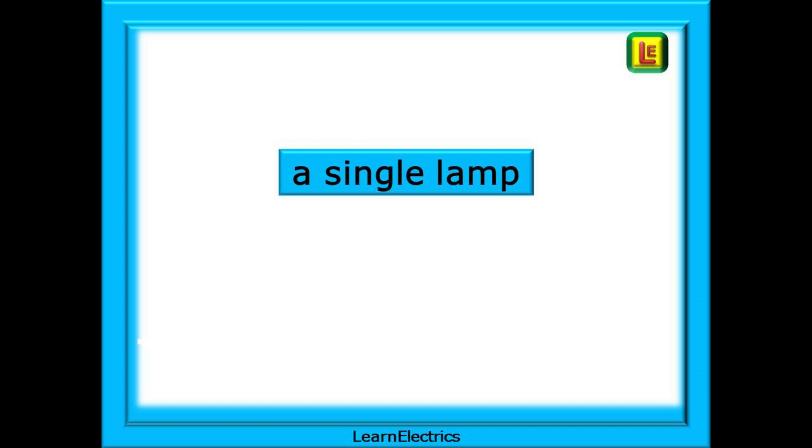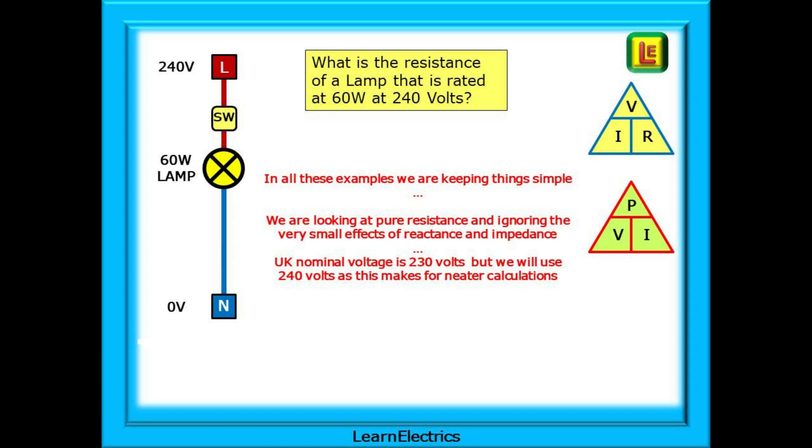Start by looking at the single lamp circuit. Begin by finding the resistance of the 60 watt lamp shown. It is designed to be connected across 240 volts. The resistance is, for now, the only thing that we know is fixed. The resistance of each lamp will not change. In all these examples, we are keeping things simple. We are looking at pure resistance and ignoring the very small effects of reactance and impedance.